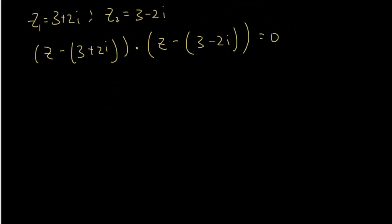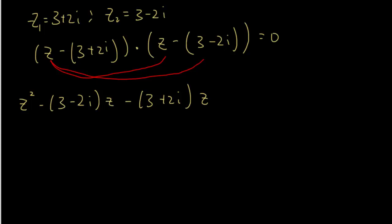So we need to expand the bracket. So that will be z², which gives me z², and then z minus 3 minus 2i times z, and then minus bracket 3 plus 2i times z, and then plus bracket 3 plus 2i times bracket 3 minus 2i.